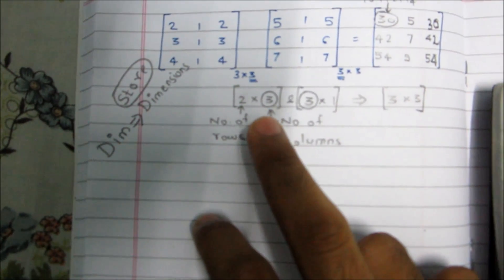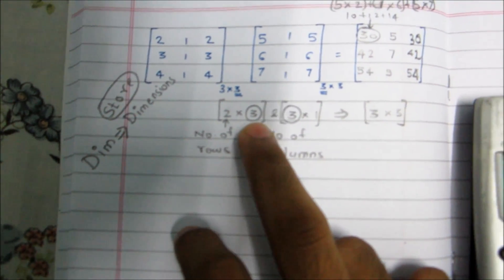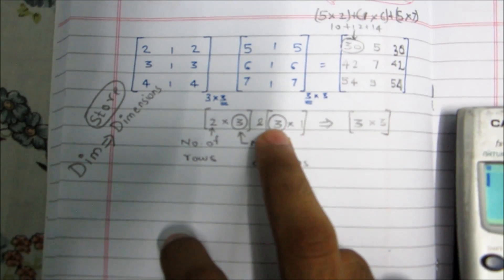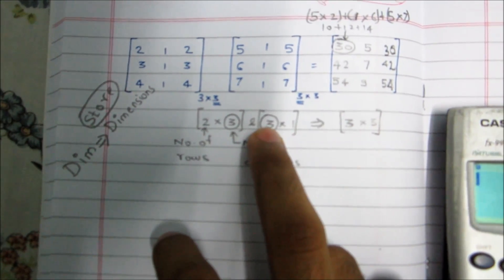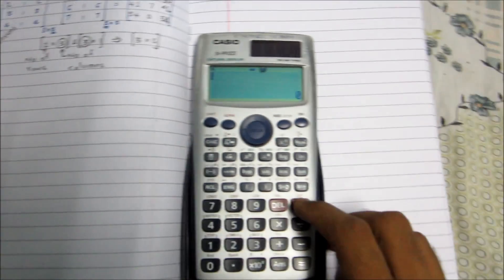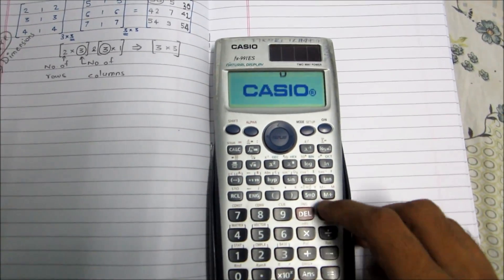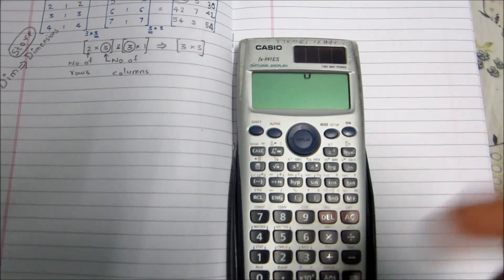As I mentioned earlier, remember that the number of columns of the first matrix and the number of rows of the second matrix must be the same. Okay, thank you guys!